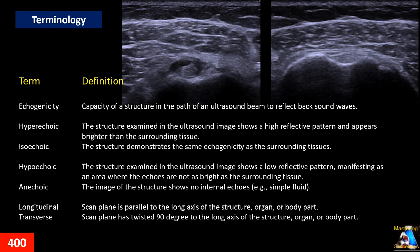The first term is echogenicity. Echogenicity is the amount of gray-scale pattern in our image, which depends on how much sound energy comes back from the tissue to the probe. The machine then creates a gray-scale image from that — that is the definition of echogenicity. When echogenicity is high, it appears brighter and we call it hyperechoic.